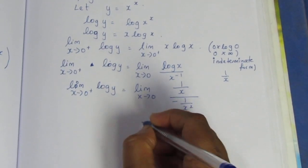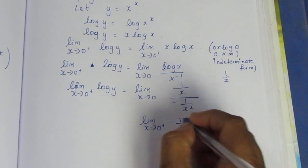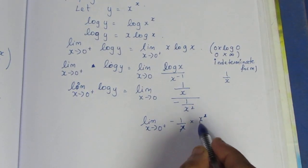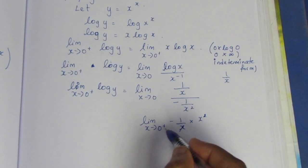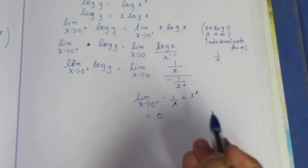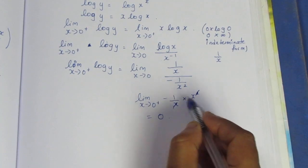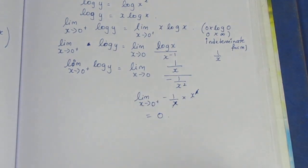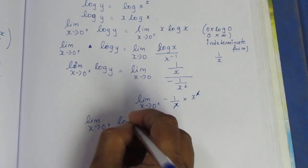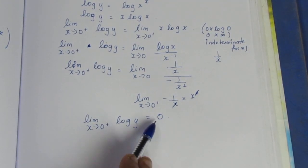Now, limit as x tends to 0 plus of minus x — substituting 0 gives minus x equals 0. So limit as x tends to 0 plus of log y is equal to 0.